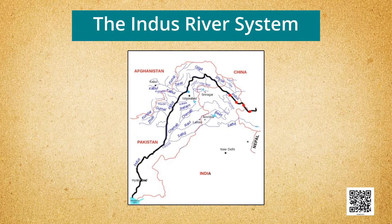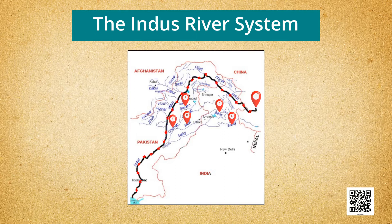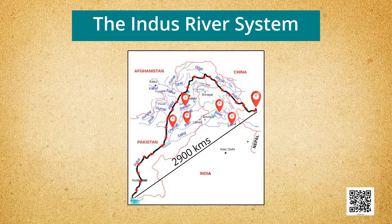The river Indus rises in Tibet near Lake Mansarovar. Flowing west, it enters India in the Ladakh district. Several tributaries — the Zaska, the Nubra, the Shyok, and the Hunza — join it in the Kashmir region. The Indus flows through Baltistan and Gilgit and emerges from the mountains at Tarbela. The Satluj, Beas, Ravi, Chenab, and Jhelum join together to enter the Indus near Mithankot in Pakistan. Beyond this, the Indus flows southwards, eventually reaching the Arabian Sea east of Karachi. With a total length of 2,900 kilometers, the Indus is one of the longest rivers of the world.